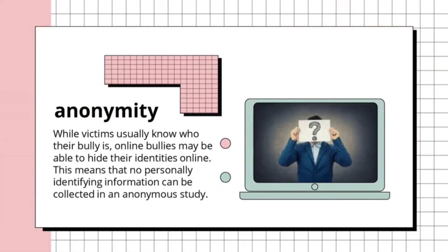Let's start off with the first characteristic, which is anonymity. While victims usually know who their bully is, online bullies may be able to hide their identities. This means that no personally identifying information can be collected. Usually, the anonymity of the internet can lead to crueler or harsher abuses from the bully, all while the victim has no means of discovering who their harasser is.